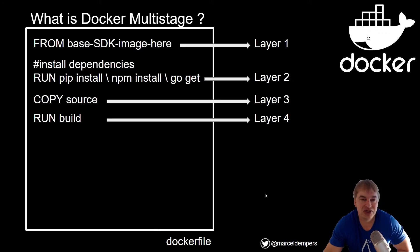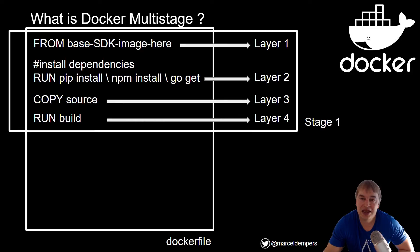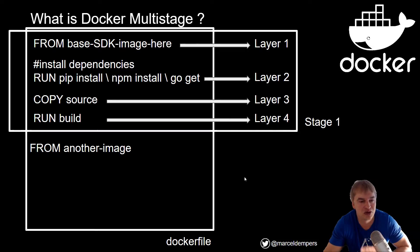Multi-stage builds let you give each stage an alias using a FROM statement. You can call the first stage 'dev'. When you run Docker Compose build you can pass in a target and say just build 'dev', and Docker will produce an image with just that stage. You can then define another FROM with a trimmed-down image — without the SDK, just the runtime or the bare minimum needed to run your application.